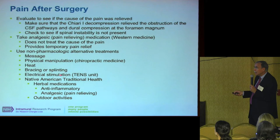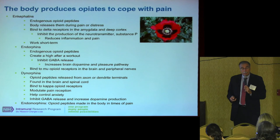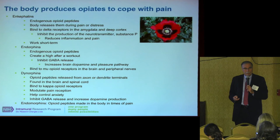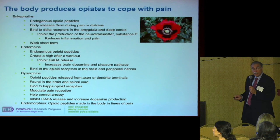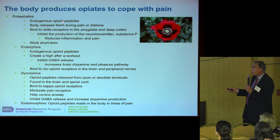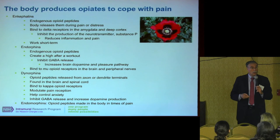You can also produce opioids in your own body. Your body makes enkephalins — endogenous opioid peptides — released during pain or distress. There are also endorphins, dynorphins, and endomorphine: four categories of morphine-like compounds your body makes. If you do enjoyable activities, you will produce some of these morphine-type drugs yourself.